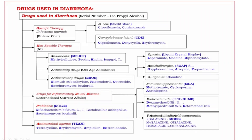The drugs that act against Campylobacter Jejuni are C-D-E: C for Ciprofloxacin, D for Doxycycline, E for Erythromycin.